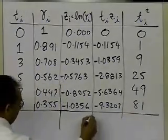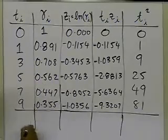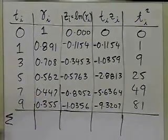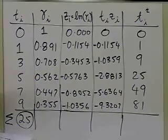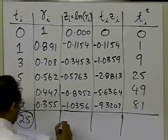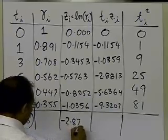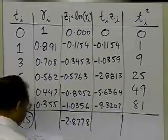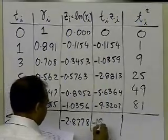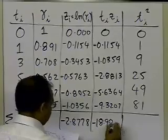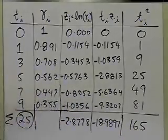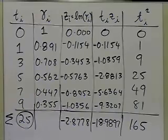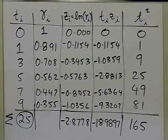Now I compute the summations needed for the formula. The summation of all ti values is 25. I don't need the summation of γi since I'm using the transformed data; the summation of zi values is −2.8778. The summation of ti·zi values is −18.9897, and the summation of ti² values is 165.